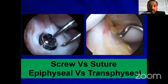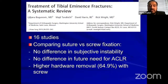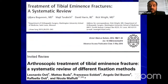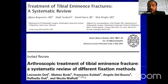For fixation techniques, you can use a screw or suture — both have good results. Epiphyseal versus transphysial fixation has shown no significant difference in outcome. A systematic review of 16 studies comparing suture with screw fixation showed no difference in subjective instability or future need for ACL reconstruction. However, with a transphysial screw you need a second surgery for removal. Another systematic review had similar findings. Also, there is no difference whether you treat this arthroscopically or with open technique — I prefer the scope because it's quicker, rehab is quicker, and I can examine the entire joint.